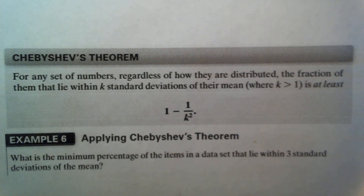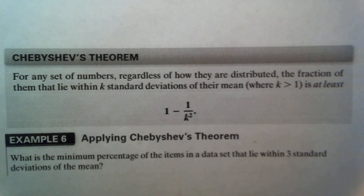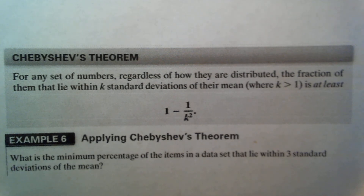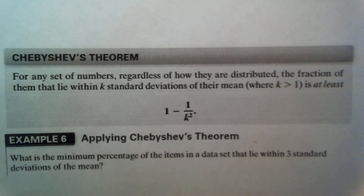The next topic is Chebyshev's theorem. It states: for any set of numbers, regardless of how they're distributed, the fraction of them that lies within k standard deviations of their mean, where k is a number greater than 1, is at least 1 minus 1 divided by k squared. It's a very simple formula that tells us how the data is distributed.